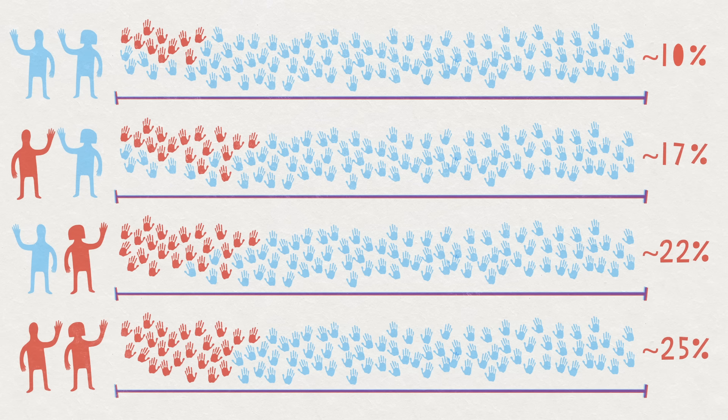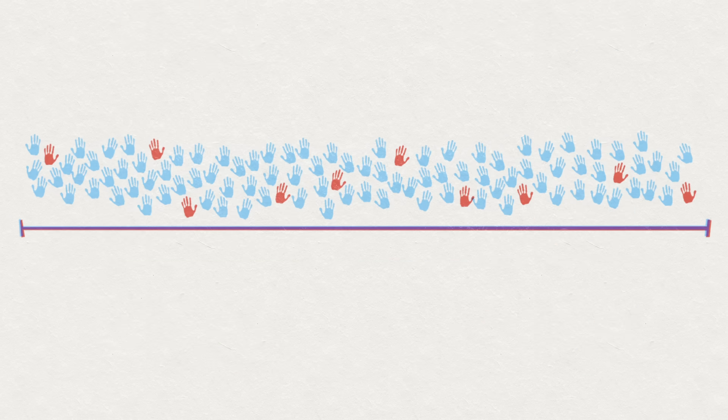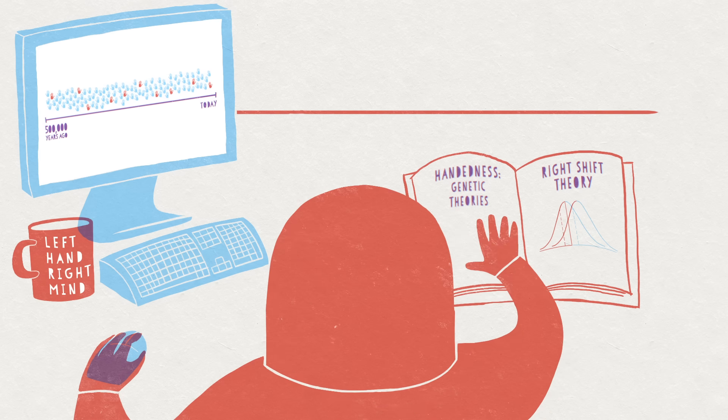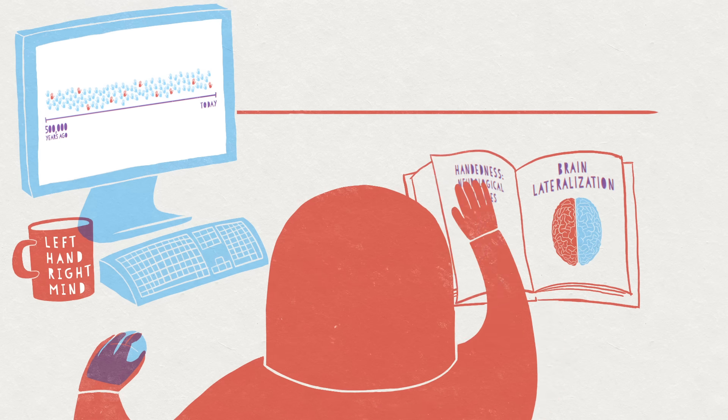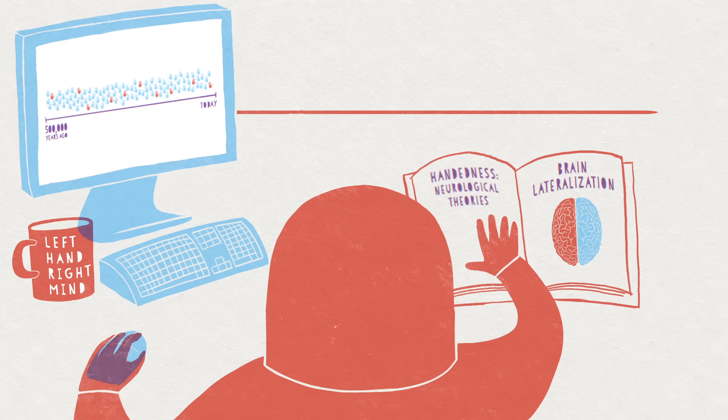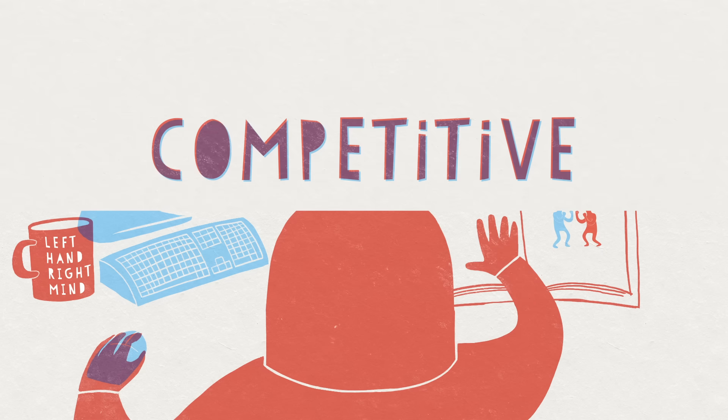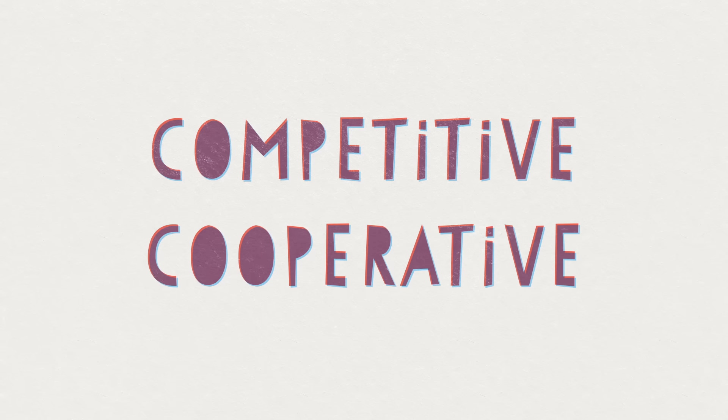All of this implies there's a reason that evolution has produced this small proportion of lefties, and maintained it over the course of millennia. And while there have been several theories attempting to explain why handedness exists in the first place, or why most people are right-handed, a recent mathematical model suggests that the actual ratio reflects a balance between competitive and cooperative pressures on human evolution.